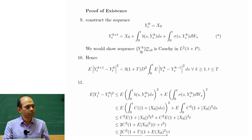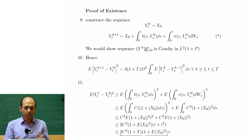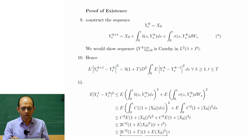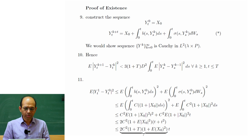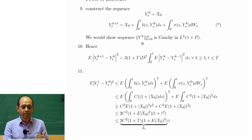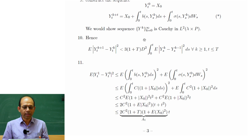We would show that this sequence is Cauchy in L²(λ × P). We must note that a process is a function of both ω and t together — two different independent variables. We show it lies in the L² space where the measure is the product measure: the Lebesgue measure λ on the time interval and P the probability measure. Since this is a complete Hilbert space, showing the sequence is Cauchy ensures existence of a limit, and that limit is a candidate for the solution, which we then verify is indeed a solution.